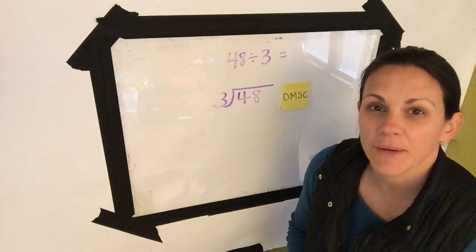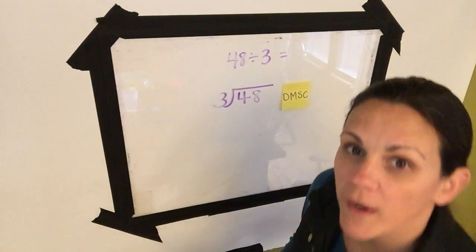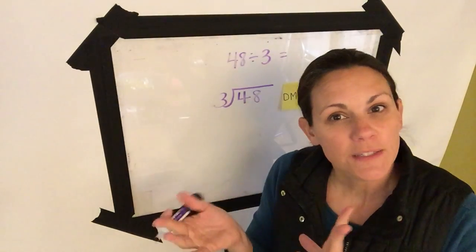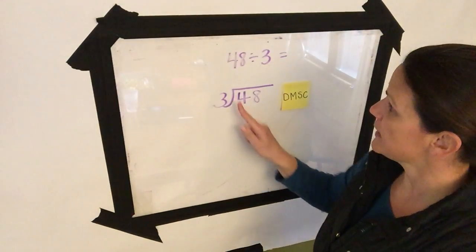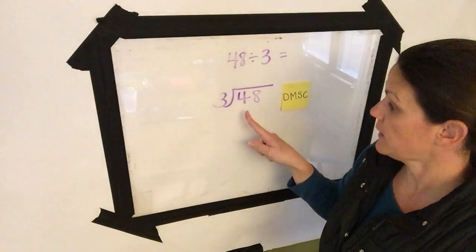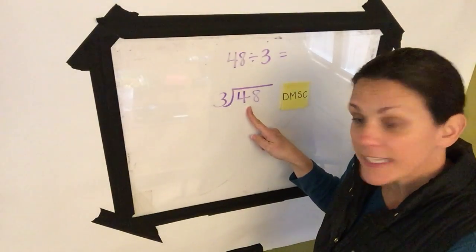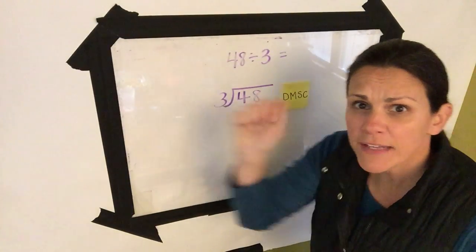All right, welcome back. I wanted to show you a type of problem where it's a little bit different. So our new problem is 48 divided by 3. 48's inside the den. 3 is the divisor knocking on the door.